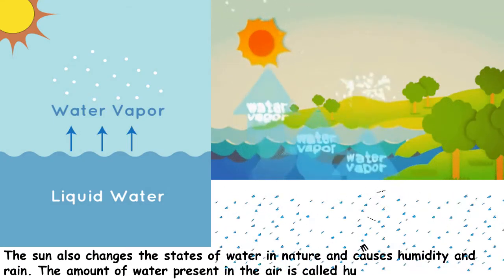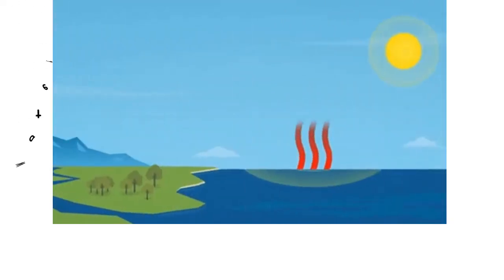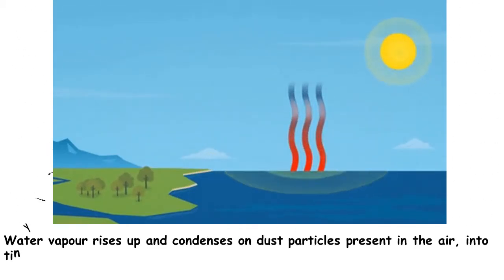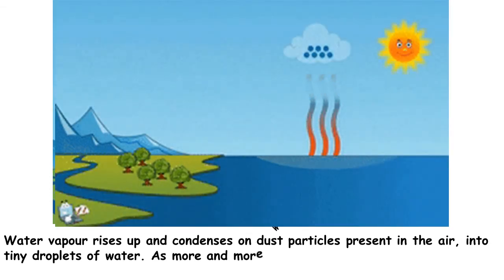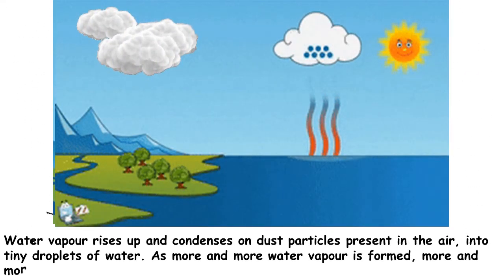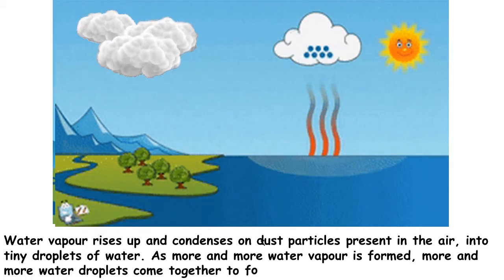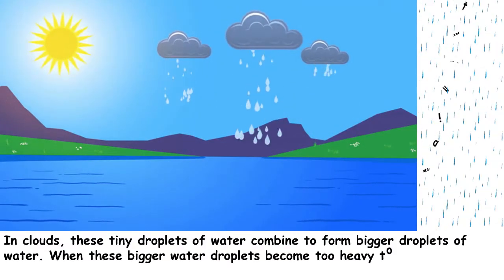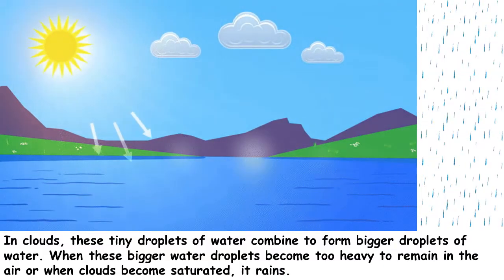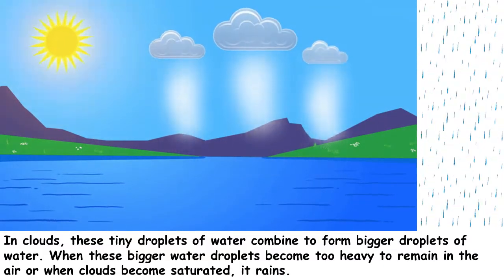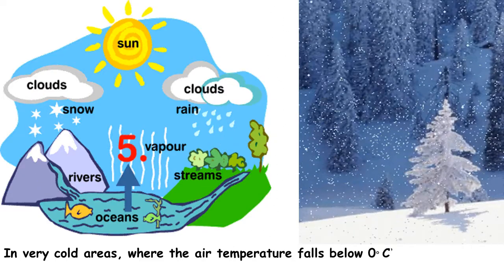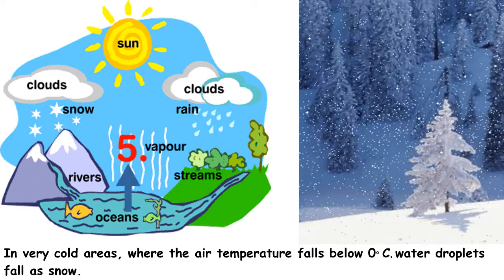The amount of water present in the air is called humidity. Water vapor rises up and condenses on dust particles present in the air into tiny droplets of water. As more and more water vapor is formed, more and more water droplets come together to form clouds. These tiny droplets combine to form bigger droplets. When these bigger water droplets become too heavy to remain in the air, or when clouds become saturated, it rains. In very cold areas where the air temperature falls below zero degrees Celsius, water droplets fall as snow.